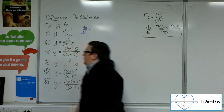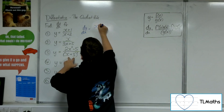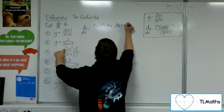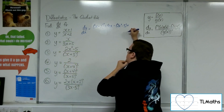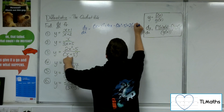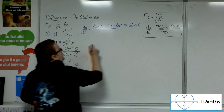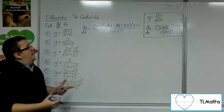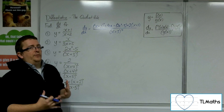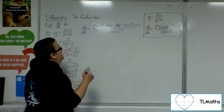Let's have a look at number 3. We have (2x²-5) over (x+3) squared. Starting with the bottom, we've got (x+3) squared times by the derivative of the top, which is 4x. Take away the top, in a bracket, times by the derivative of the bottom. We differentiate that using the chain rule: the 2 comes down to the front, the derivative of what's inside is 1, leaving just (x+3) to the 1. Over the bottom squared, which will be (x+3) to the 4.